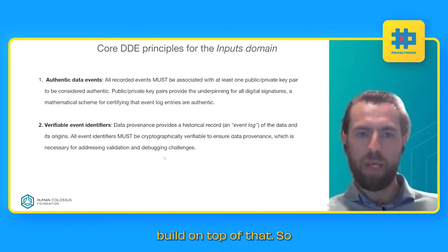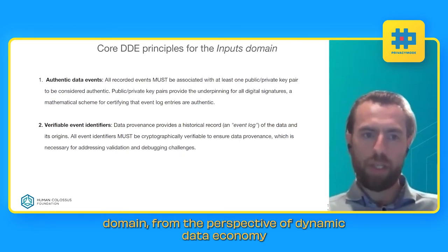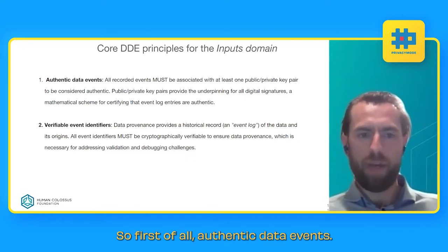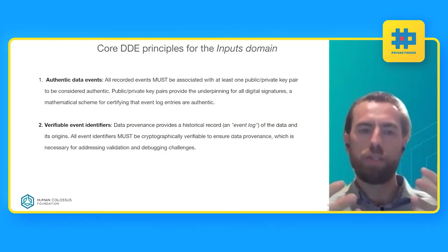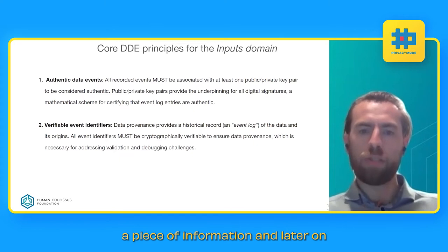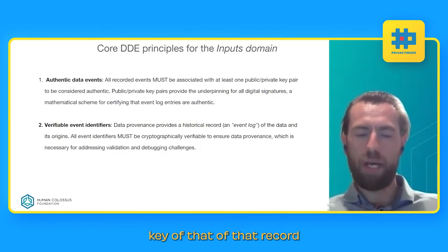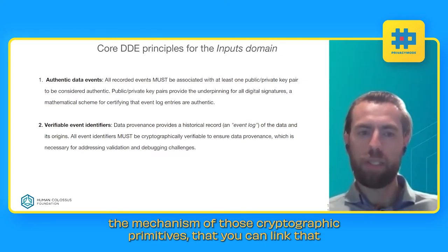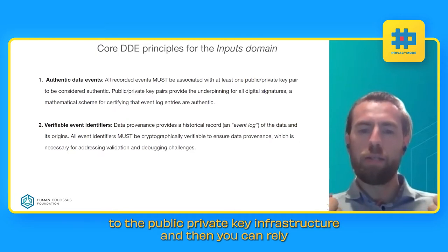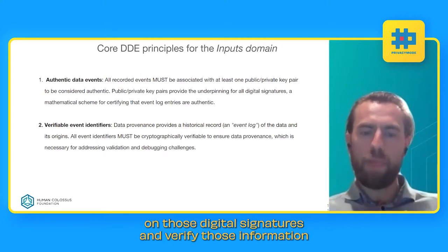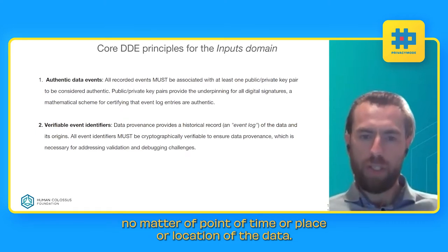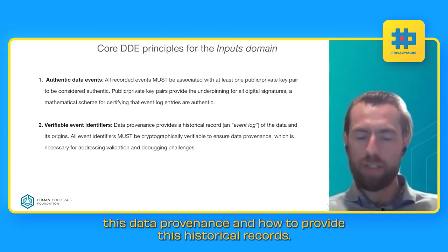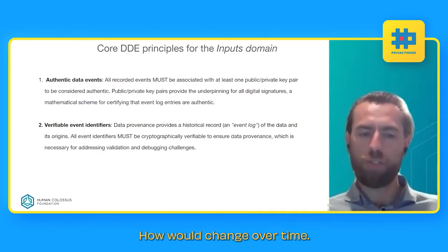From the input domain perspective of the Dynamic Data Economy, there are two main principles worth mentioning. First, authentic data events: how you can record a piece of information and later verify the origin and immutability of that record. You leverage cryptographical primitives, linking records to public/private key infrastructure. You can then rely on digital signatures and verify information regardless of the point in time or location of the data. Second, verifiability of the event identifier: providing data provenance and a historical record of how things changed over time.